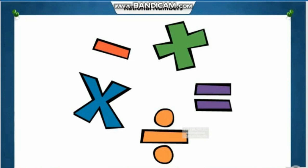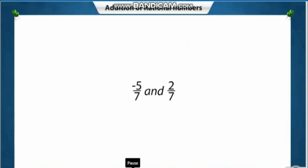Let's study how to perform operations on rational numbers. Let's try to add two rational numbers with the same denominators. It's simple — we just have to add the numerators and keep the same denominator.